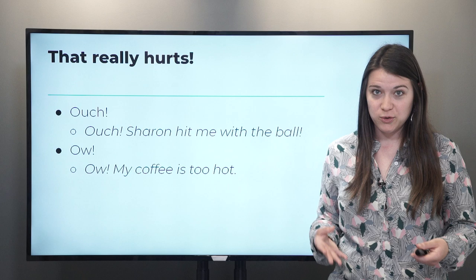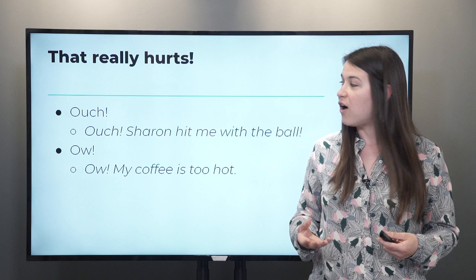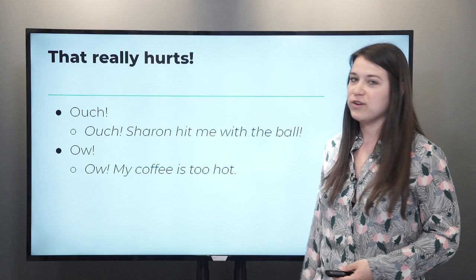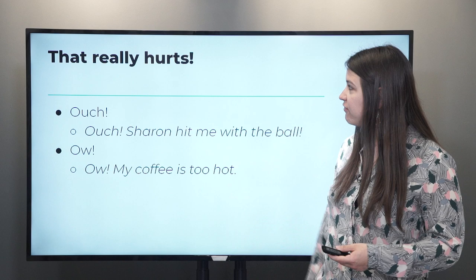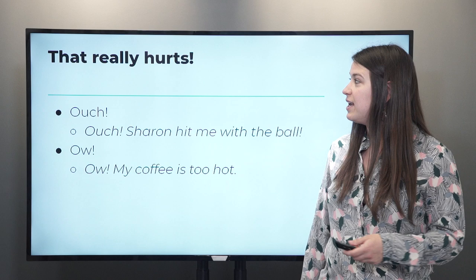If something hurts you — like you are hit by something, or you stub your toe, or you trip and fall — you can yell an interjection like 'ouch.' For example, 'Ouch, Sharon hit me with the ball.' Another way to say ouch, or that something hurts, is 'ow.' For example, 'Ow, my coffee is too hot.' So to express feelings of pain, we use interjections.